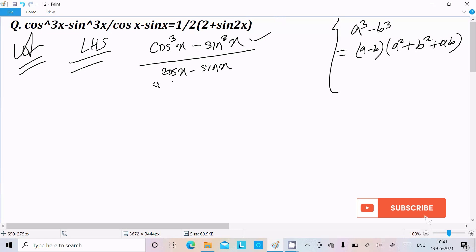So we need to break this one. Suppose this one is a, here b³ is there, ³ minus between. So a minus b, that is cosx minus sinx.